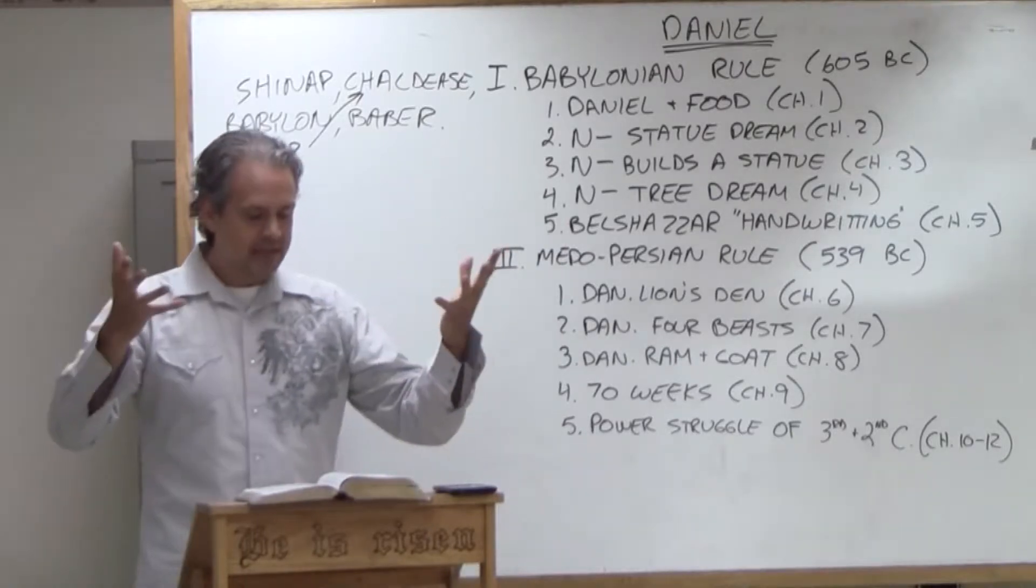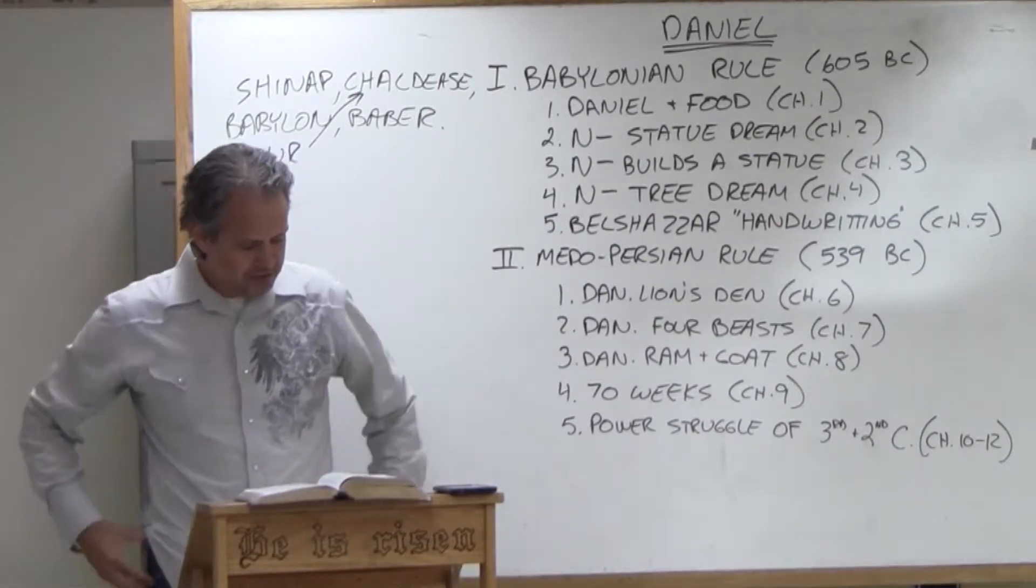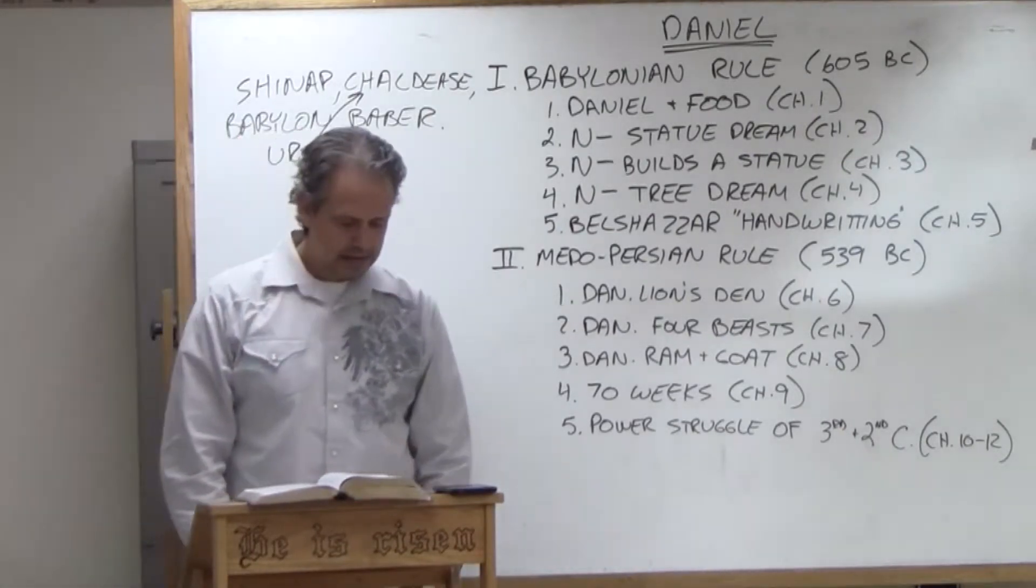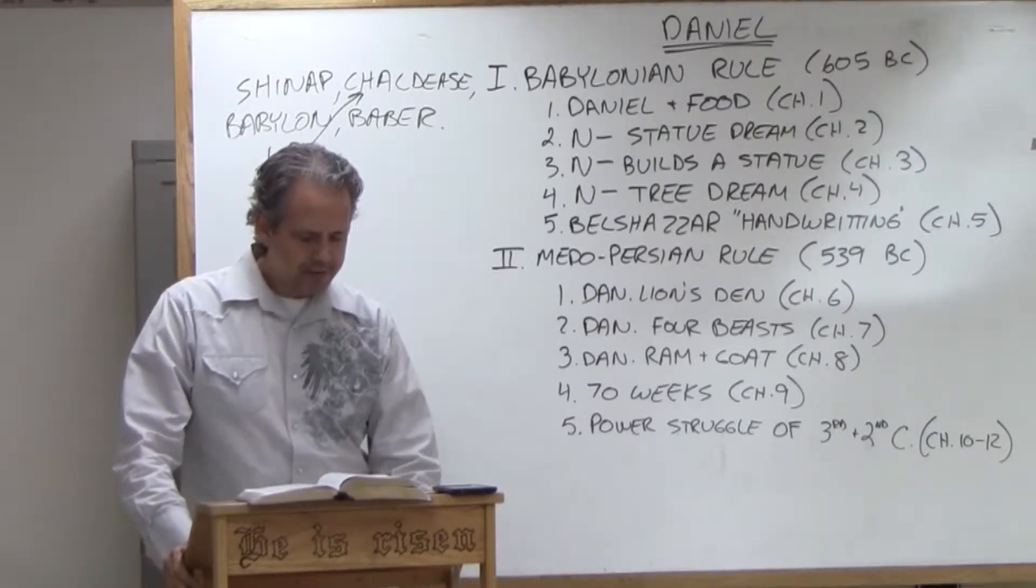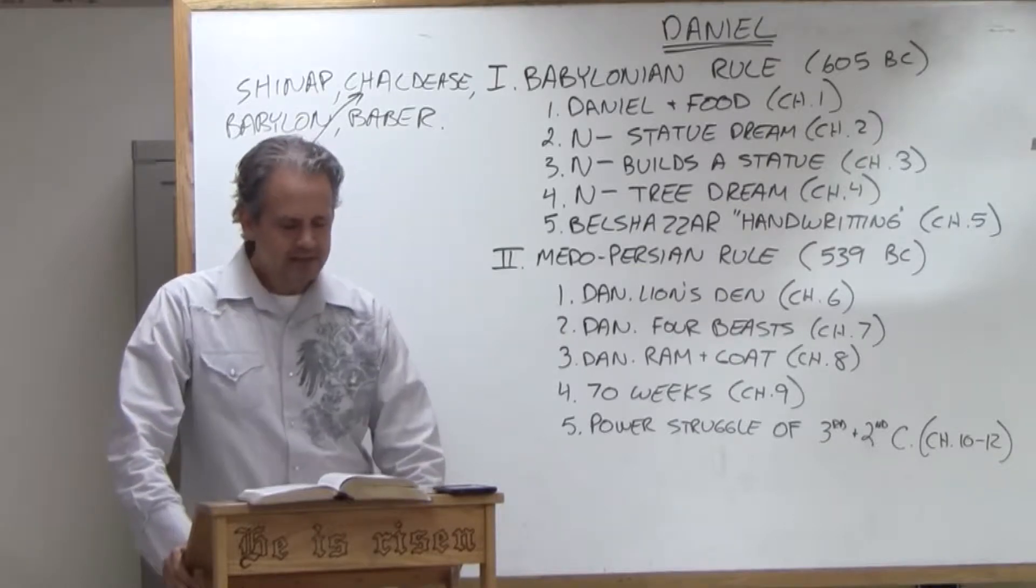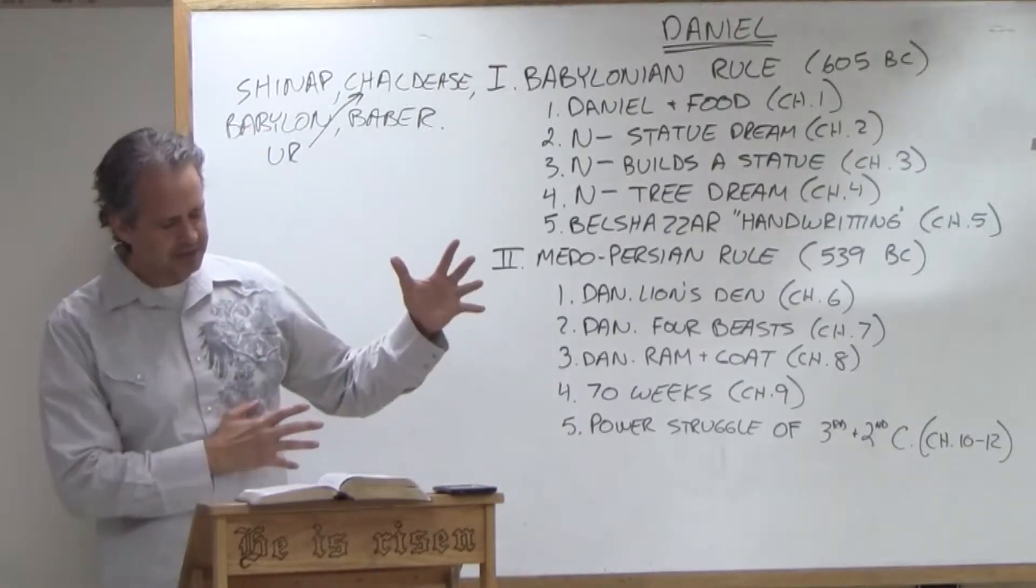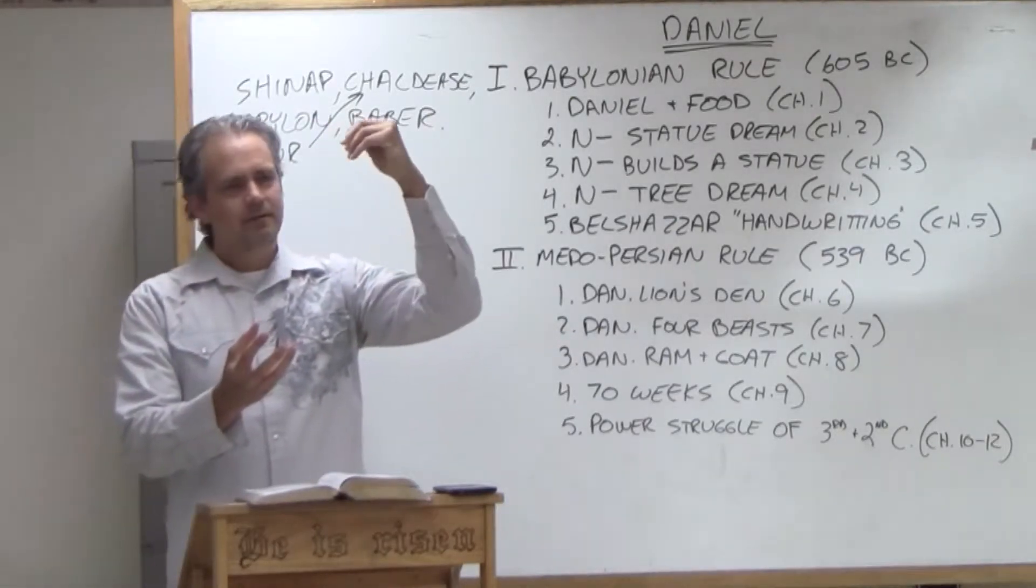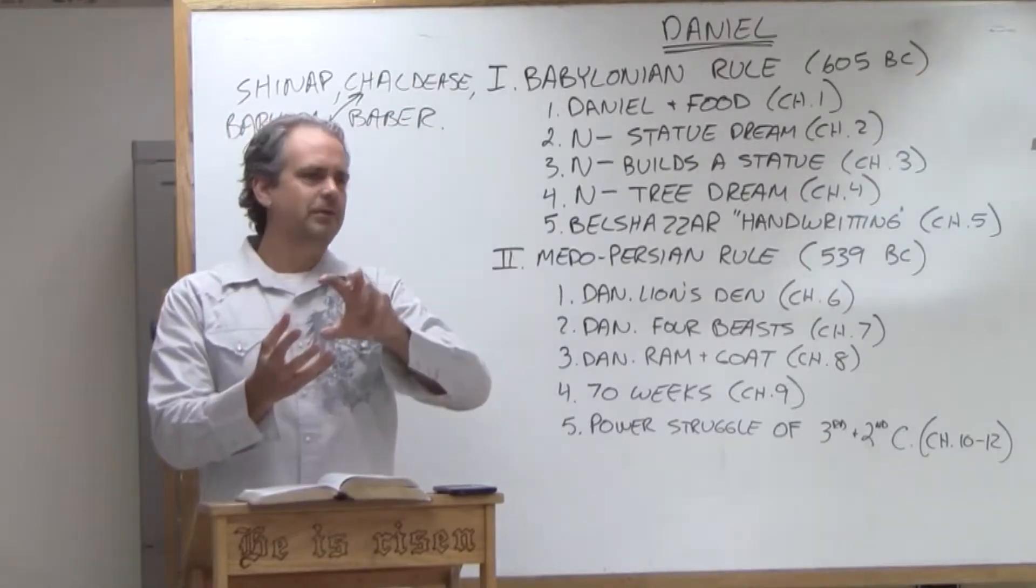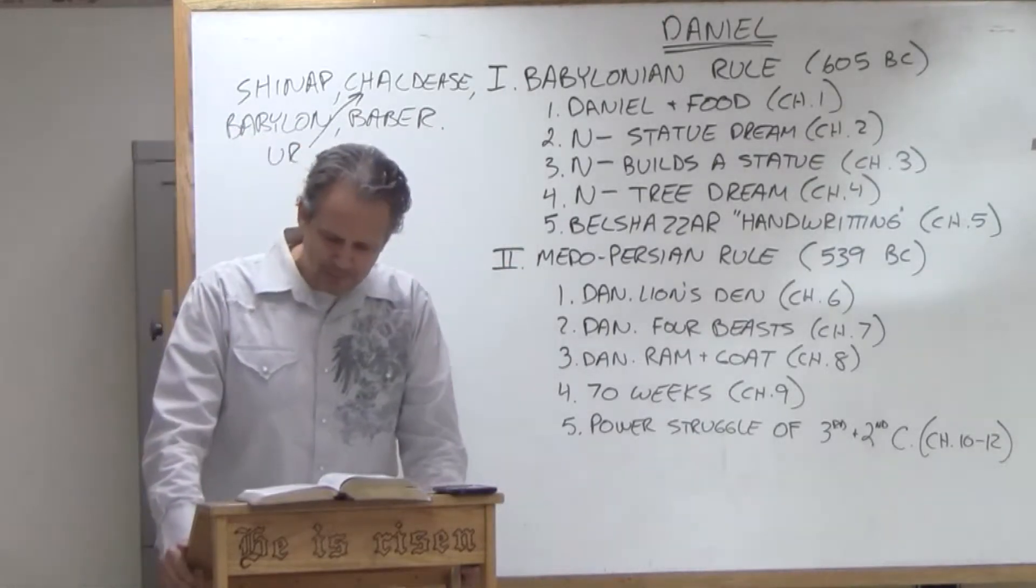God blesses Daniel in this case for taking his stance against the tyranny of the king. Look down at chapter 1 verse 20. In every manner of wisdom and understanding about which the king inquired of them, he found them ten times better than all the magicians and enchanters that were in the kingdom. He's going to end chapter 1 by saying Daniel was there until the reign of King Cyrus. Year 1 of Babylon, learns from the Babylonian schools, he's there all the way until Cyrus. That's the end of chapter 1.